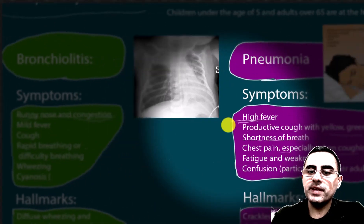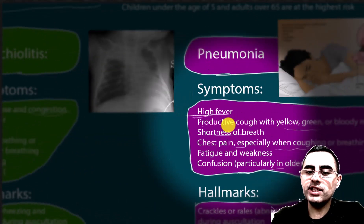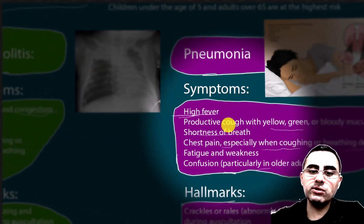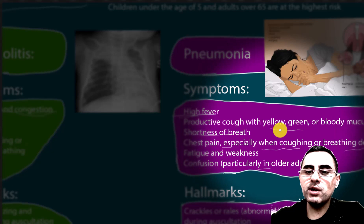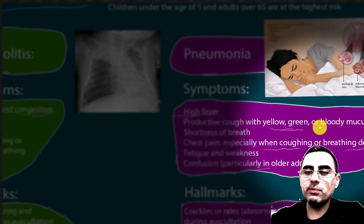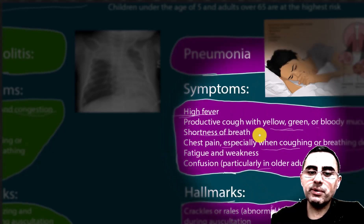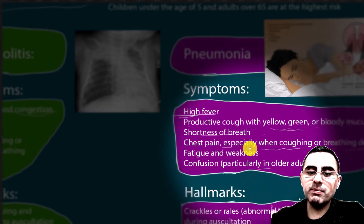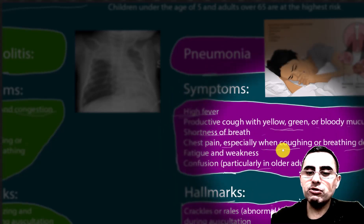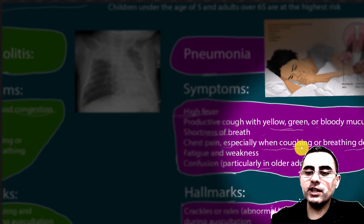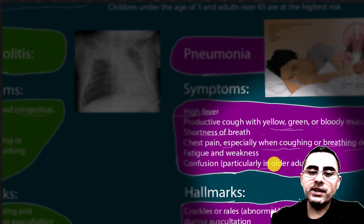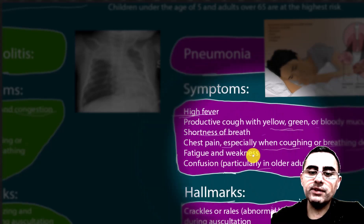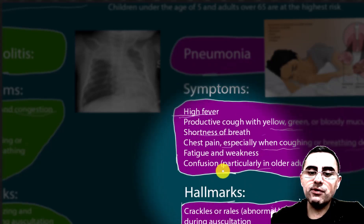Pneumonia symptoms include productive cough — usually yellow, green, or bloody mucus — shortness of breath, chest pain usually when coughing or breathing deeply, fatigue and weakness, and confusion, particularly in older adults.